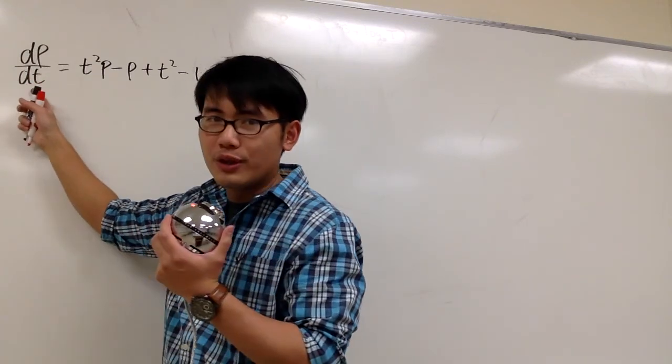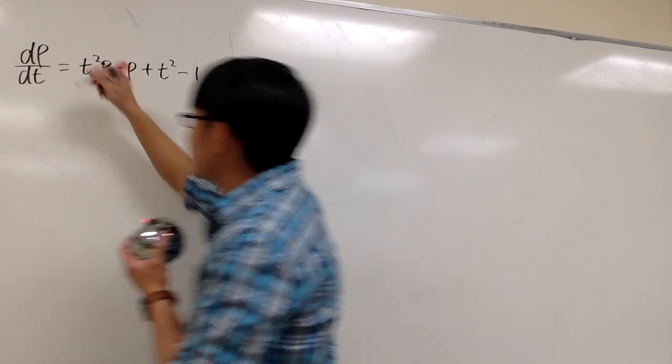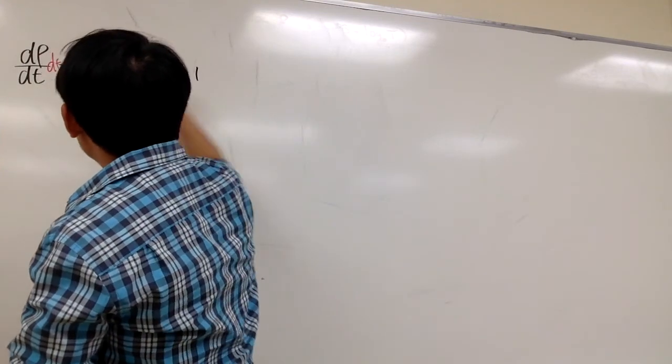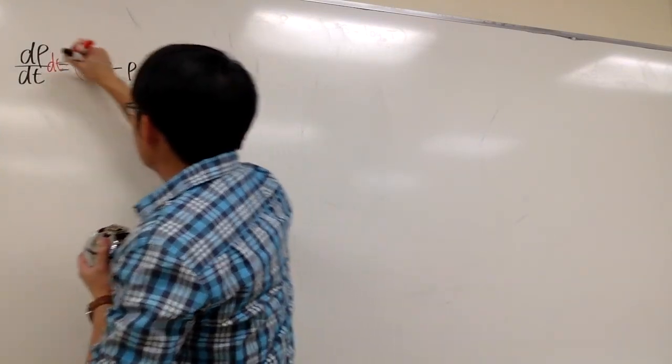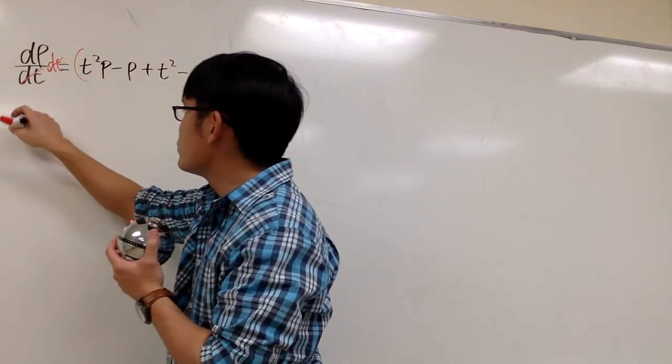First of all, we shouldn't have any differential on the bottom, so let's multiply by dt on both sides. So multiply by dt here, and multiply by dt here, so they cancel each other out. And then on the left-hand side, we just have dp,